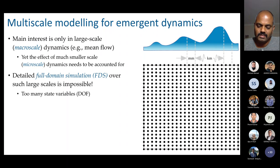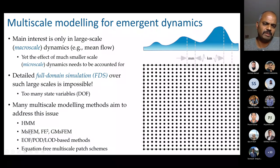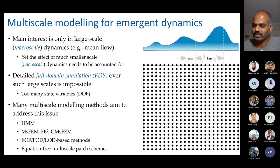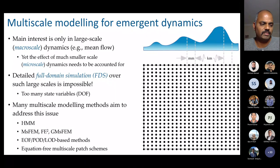If we have to capture such effects of micro scale dynamics by doing a very detailed full domain simulation, that would be prohibitively computationally expensive. Over a large range of scales, a millimeter-scale simulation would lead to very many state variables. There are many multi-scale modeling methods — heterogeneous multi-scale methods, multi-scale finite element methods, empirical orthogonal functions, proper orthogonal decompositions — all aiming to reduce the number of state variables.